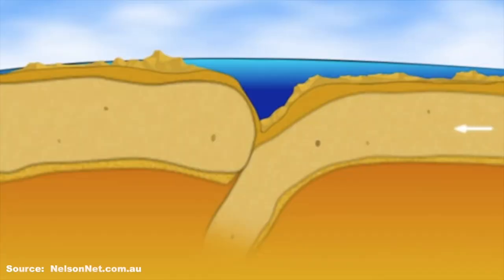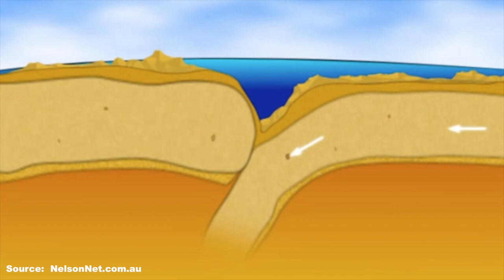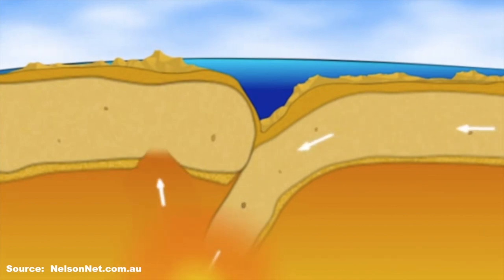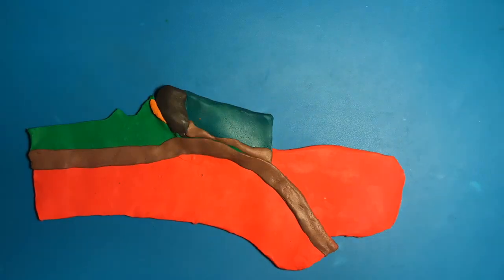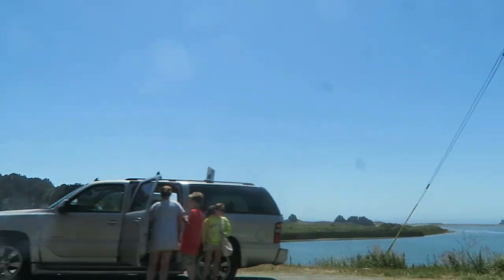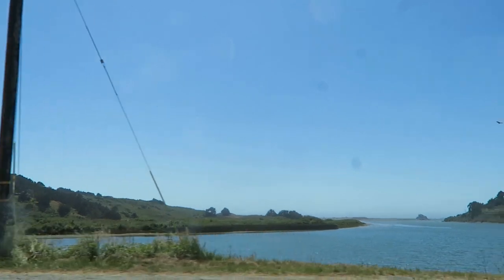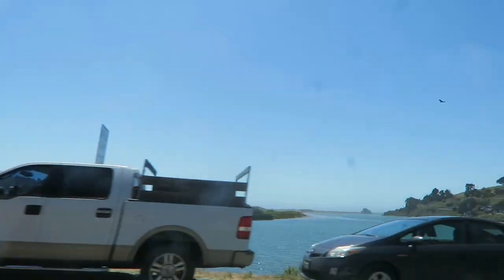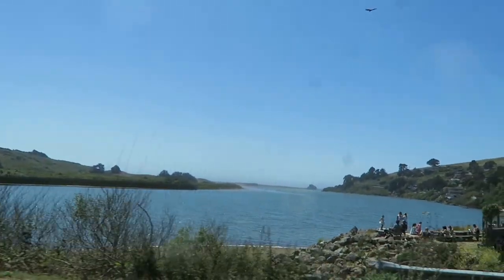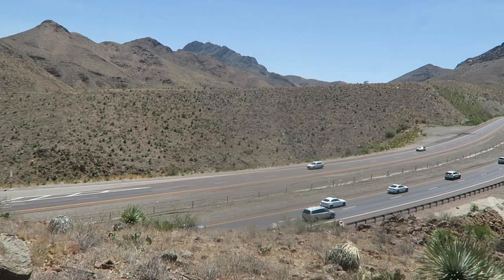When an oceanic plate gets subducted, it returns the carbon within the carbonate rocks to the mantle, and this eventually gets returned to the atmosphere through volcanoes. Alternatively, the limestone gets uplifted, weathered, and then transported to the sea.